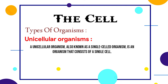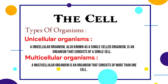Types of organisms: Unicellular organisms — a unicellular organism, also known as a single-celled organism, is an organism that consists of a single cell. Multicellular organisms — a multicellular organism is an organism that consists of more than one cell.